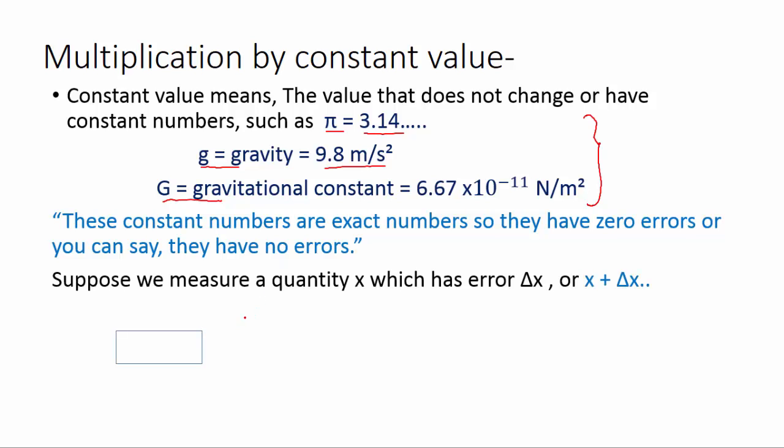So the same way, if we measure a quantity x which has error delta x, and then we have to find a new quantity z which is the multiplication of constant value k and variable x. x is the variable and k is the constant here. So now we have to find the error in z. What we will do? You know k has no errors because it's a constant value. So the error in z would equal error in x.